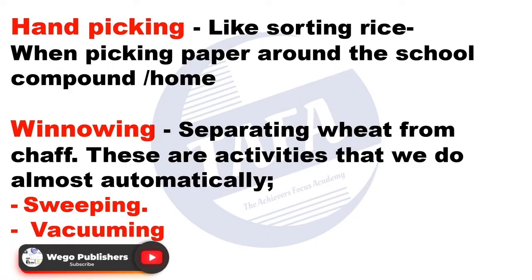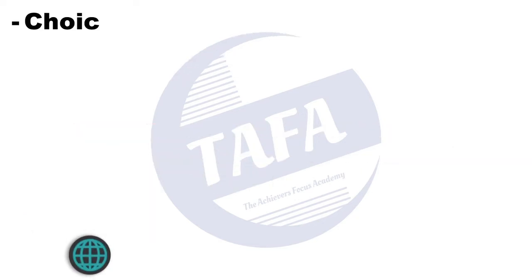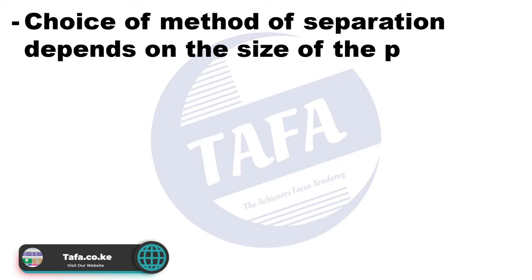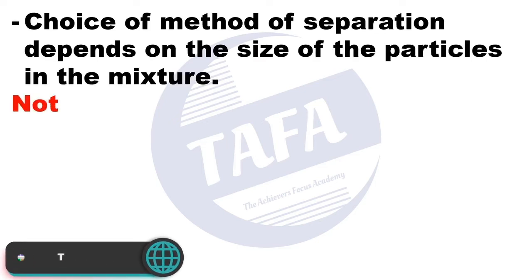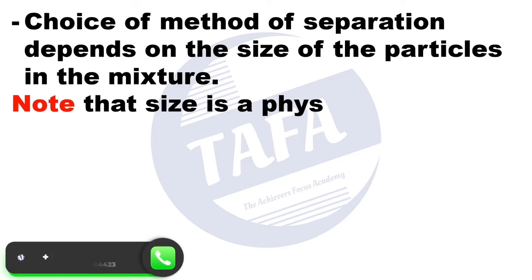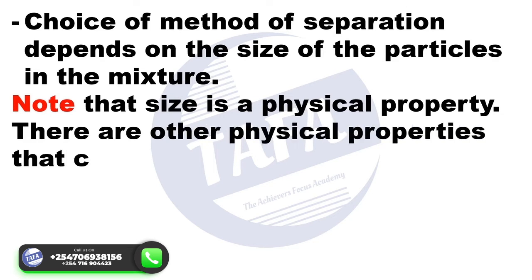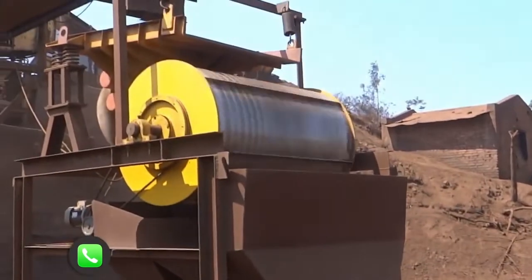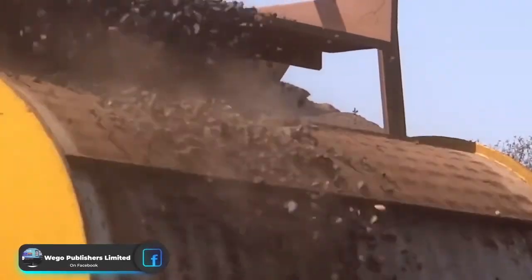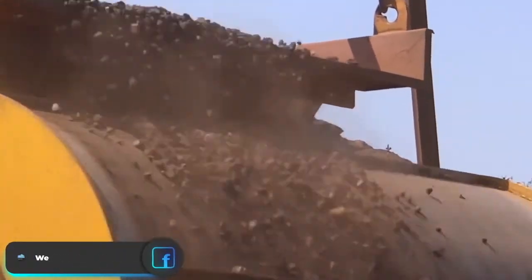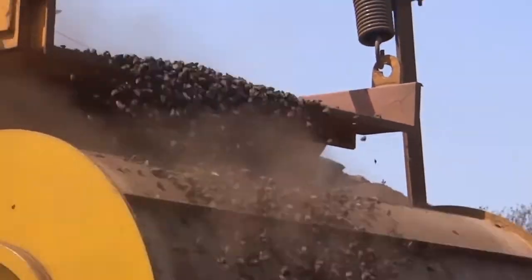The choice of the method of separation depends on the size of the particles in the mixture. Note that size is a physical property. There are other physical properties that can be used — for example, whether a substance has the ability to be attracted by a magnet.